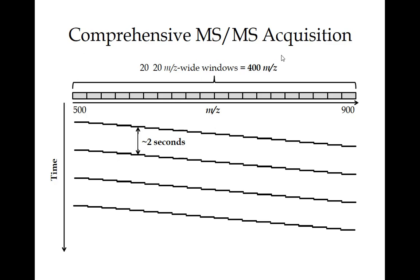Why is it called data-independent acquisition? We're clearly acquiring data — why is it data-independent? Because you're not based on a target list generated from prior MS1 monitoring. That's right — there's no target list. More specifically, there's no list generated from an MS1 survey scan. In data-dependent acquisition, the MS/MS scans acquired are dependent on the precursors seen within an MS1 scan event. Whereas in DIA, it's independent of any prior observations in the data.